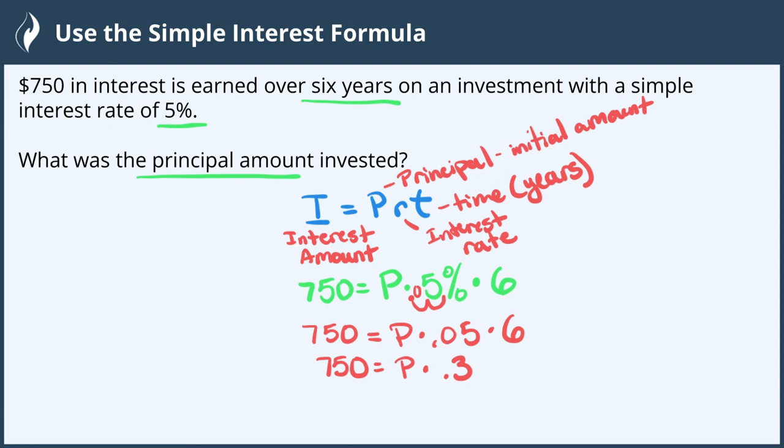Now we need to solve for P by dividing both sides by 0.3.